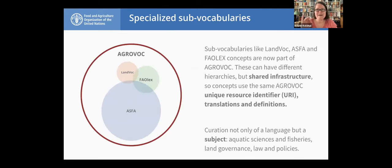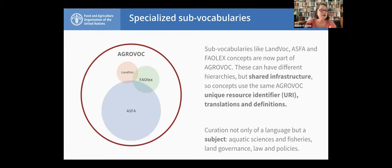You might have heard that we have sub-vocabularies or sub-schemes within AgroVoc. If you have a glossary or defined terminology set, it is possible to link that to AgroVoc. Everything belongs in AgroVoc, but then it can be pulled out — for example, on land governance, fisheries, or legal and policy issues. This is all a shared infrastructure. We benefit from having the same infrastructure, the same URI, shared translations, but it's possible to pull it out and share it as a standalone resource for a more specialized community. This has been going on for a couple of years now and it's working well.